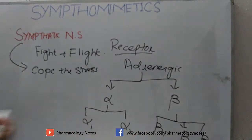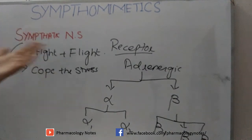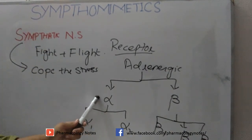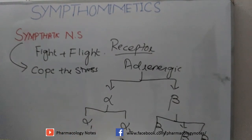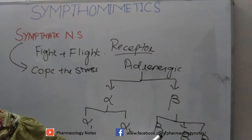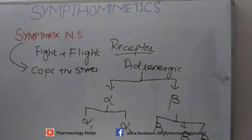Beta-3 is a modified form of beta-1. So adrenergic receptors are classified as alpha adrenergic receptors, with further subtypes alpha-1 and alpha-2, and beta adrenergic receptors, with types beta-1, beta-2, and modified beta-3.